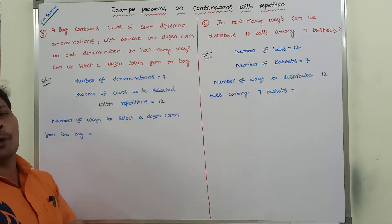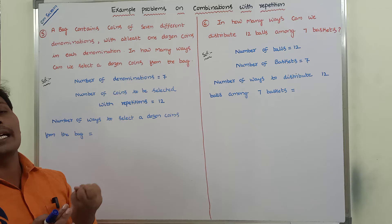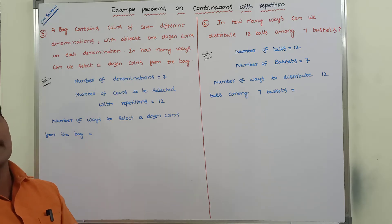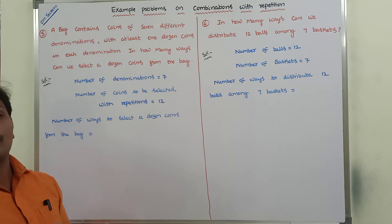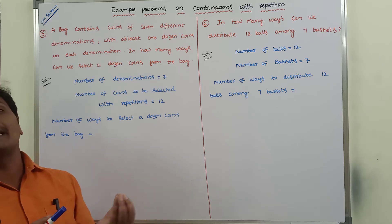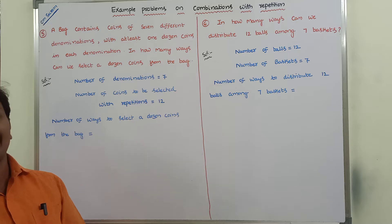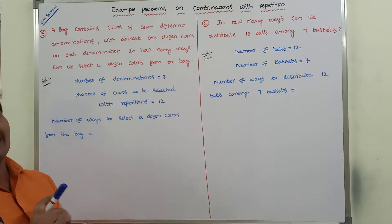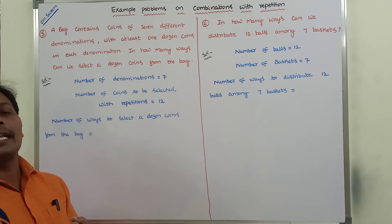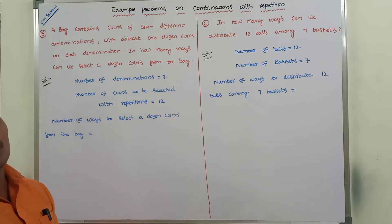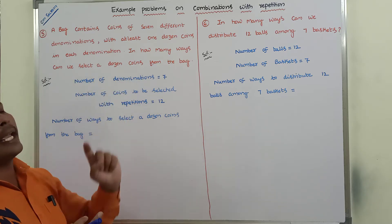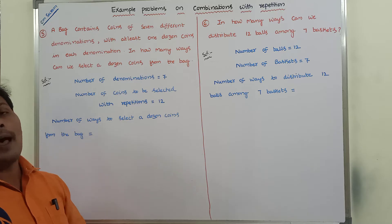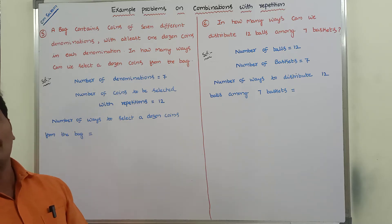The data given in the problem: a bag contains seven different denominations — for example, 10 rupees coin, 5 rupees coin, 2 rupees coin, 1 rupee coin, 100 rupees coin, and so on — seven different denominations. In each denomination, there are 12 coins. In how many ways can we select a dozen coins from the bag?